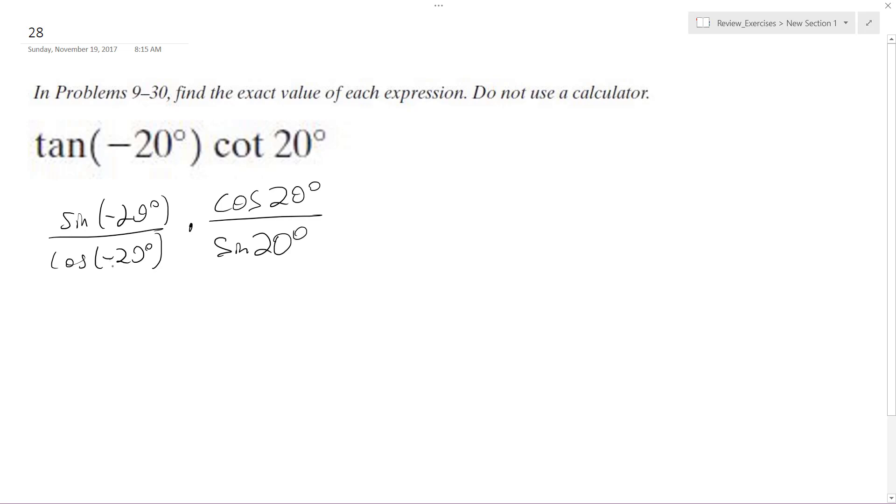So what happens here is, sine's an odd function, so I can pull out the negative 20, or the negative becomes that, and then cosine of 20 over sine of 20, those stay the same.